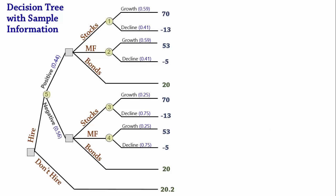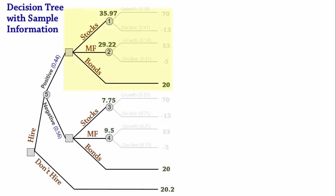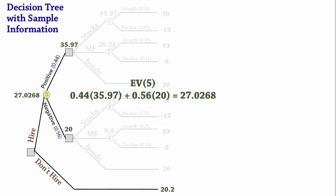The chance nodes have now been labeled 1 to 5 for reference purposes as we calculate the expected values. The expected value for node 1 is 0.59 times 70 plus 0.41 times negative 13, which equals 35.97. In similar fashion, we calculate the expected value for nodes 2, 3, and 4. If the report is positive, the best expected value is 35.97 from stocks. If the consultant's report is negative, the best expected value is 20 from bonds. Next, we calculate the expected value for node 5, which is 0.44 times 35.97 plus 0.56 times 20, which gives 27.0268.